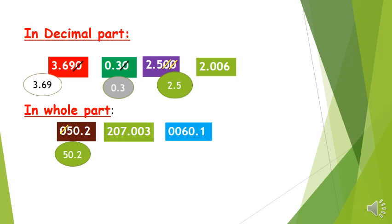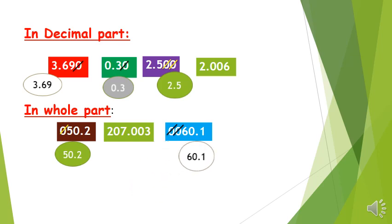In the number 0060.1, the leading zeros in the whole part are useless, so it is equal to 60.1.